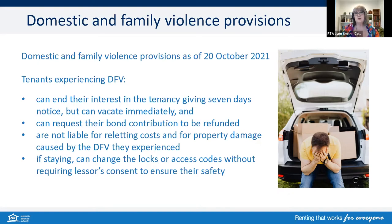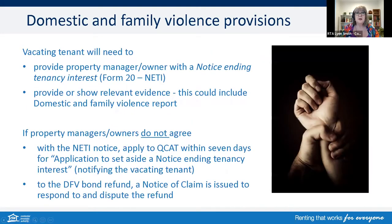The DFV provisions are effective as of 20 October 2021. Tenants experiencing DFV can end their interest in the tenancy, request their bond contribution be refunded if they've paid bond money. They're not liable for re-letting costs or any damage caused by the domestic and family violence. If they decide to stay in the rental property, they can look to change the locks or any access codes without the owner's consent to ensure their safety — though they will need to provide a copy of the keys when it's practical to do so. The vacating tenant will need to provide the property manager or owner with a notice ending tenancy interest, and will also need to provide a copy or show relevant evidence, such as a protection order, a police notice, or a completed domestic and family violence report.